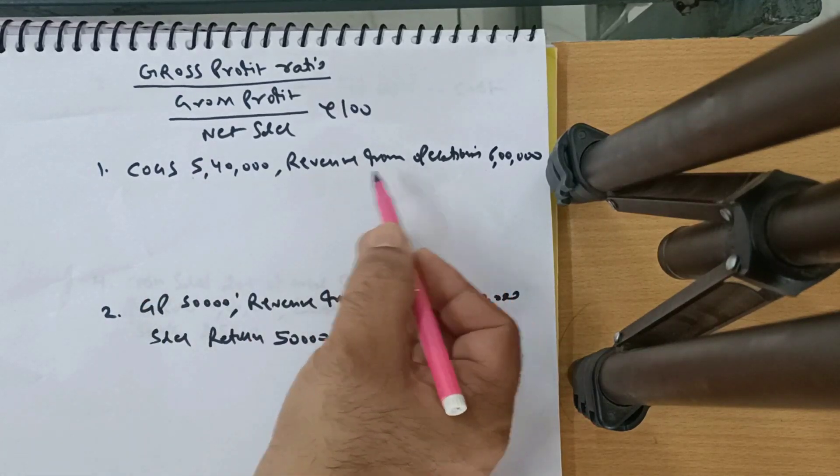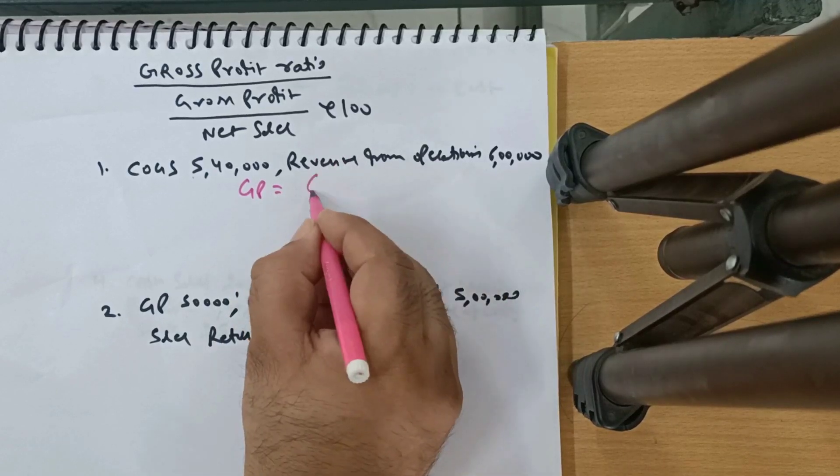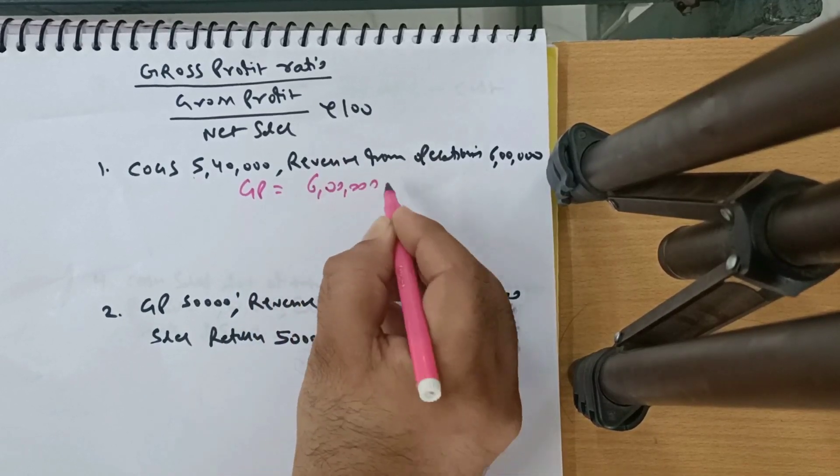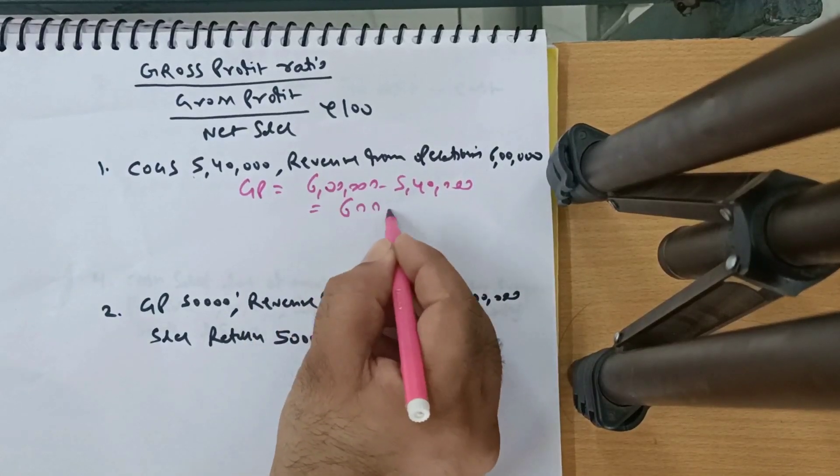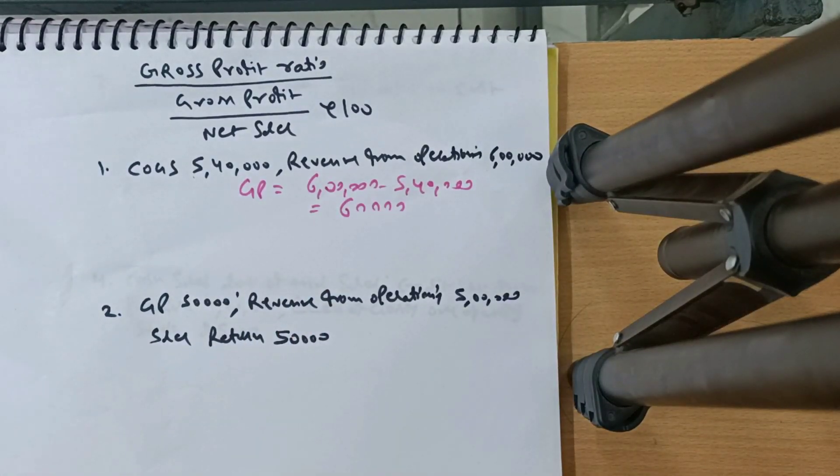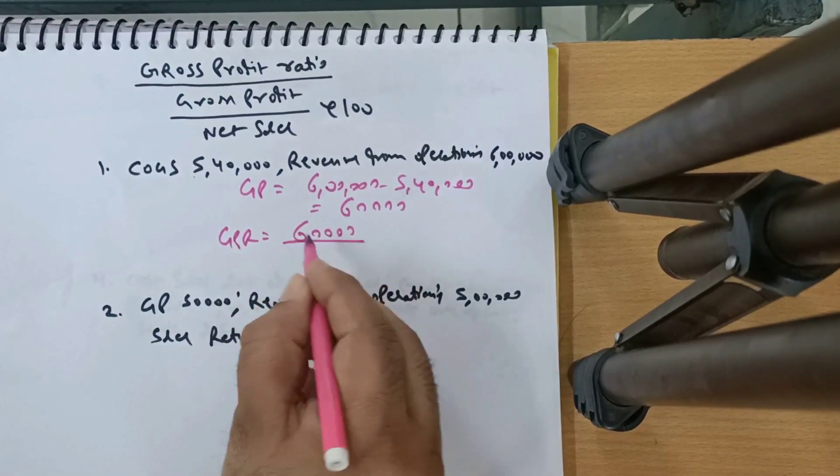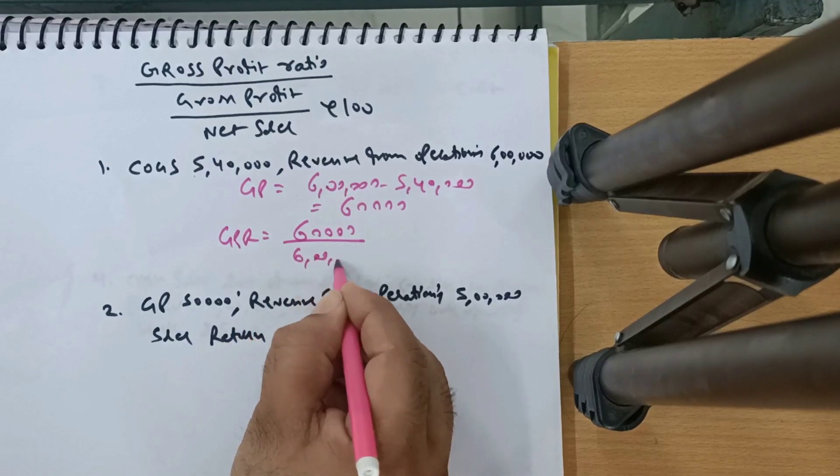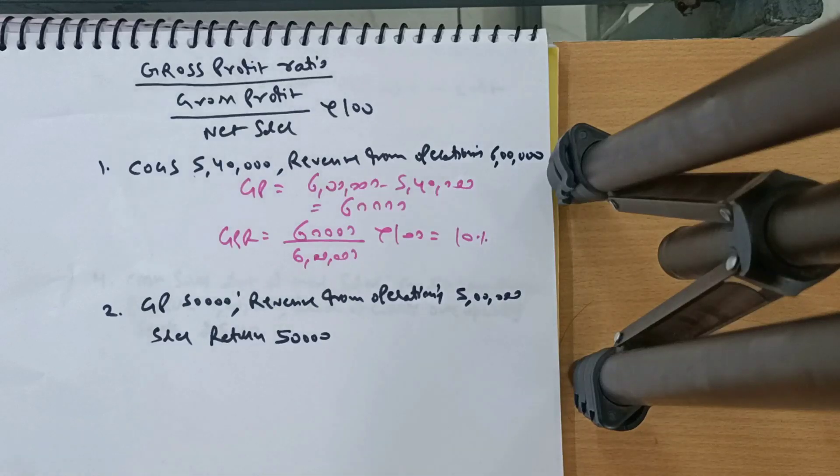You have given COGS and Net Sales or Revenue from Operation. GPR would be - sales minus COGS. 6 lakh minus COGS 5 lakh 40,000, that's 60,000. Remember, COGS is sales minus GP, so GP would be sales minus COGS. GPR that's Gross Profit upon Net Sales, which is 6 lakhs into 100. And the answer is 10%.